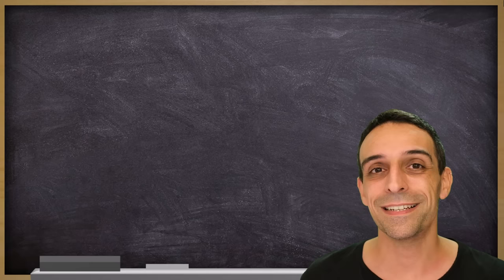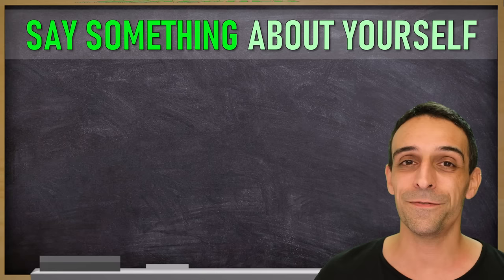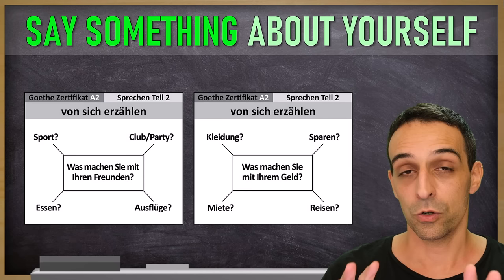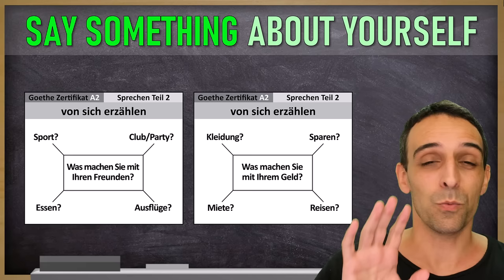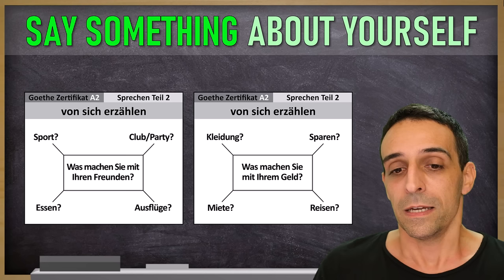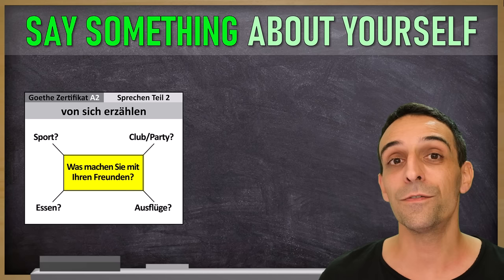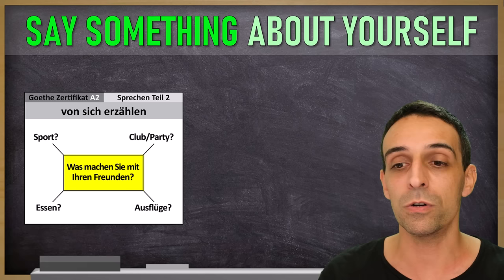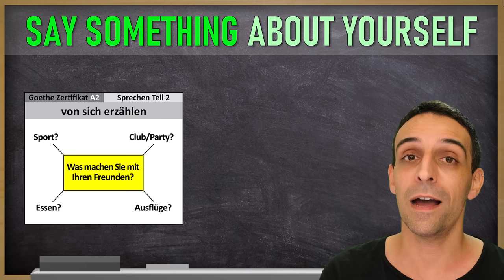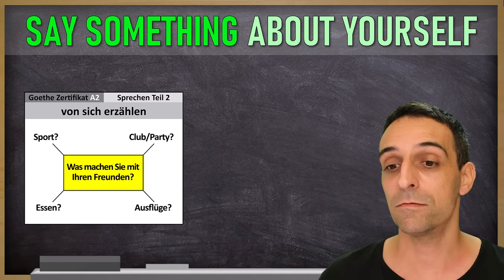Sprechen Teil 2. Here you have to say something about yourself — it's a monologue. You will also get two cards, but they look different. In the middle of the card there is a question, for example: Was machen Sie mit Ihren Freunden? And around this question there are four keywords: Sport, Essen, Club/Party, Ausflüge. You have to talk about these four keywords and answer the central question.